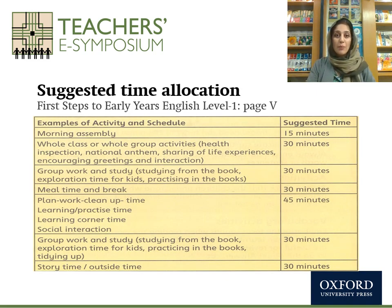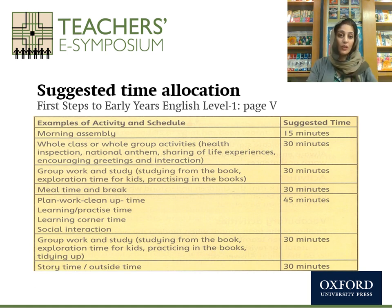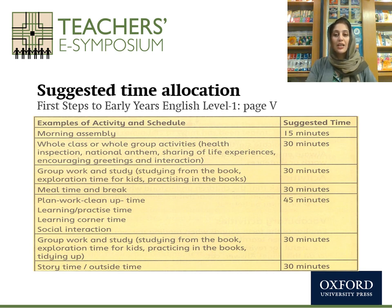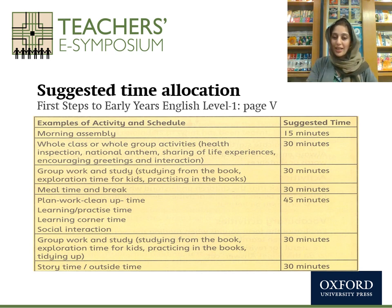As I mentioned, in order to maintain a balance between academic expectations and developmental needs of young students, we should create a schedule. There has to be a schedule that includes indoor and outdoor physical play. As you can see in the table from the book First Steps to Early Years Level 1, there is a suggested allocation of time for each activity: morning assembly, whole class or group activity, health inspection, national anthem, and sharing of life experiences — which is what we do in circle time in early years classes and is also suggested in the single national curriculum.